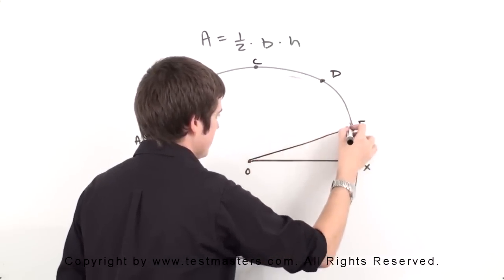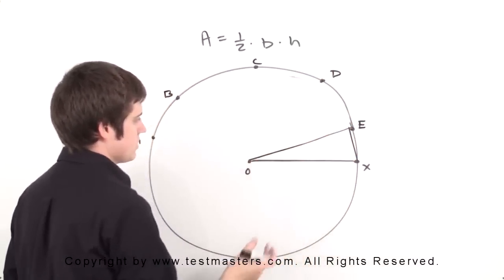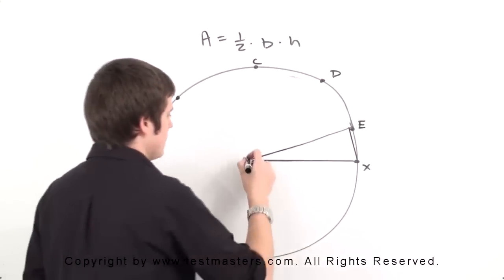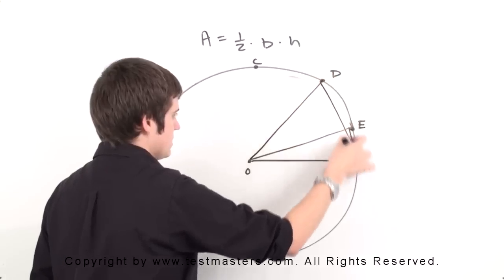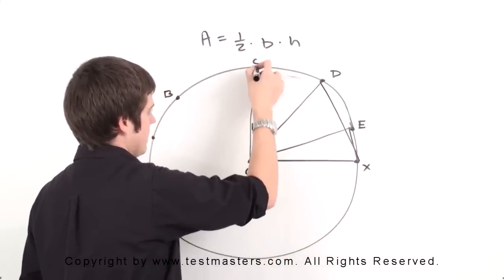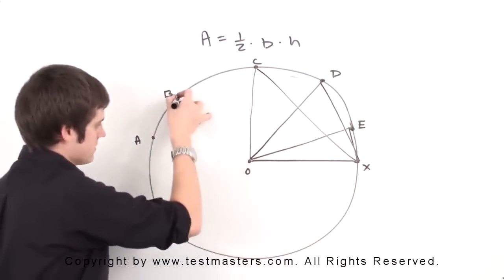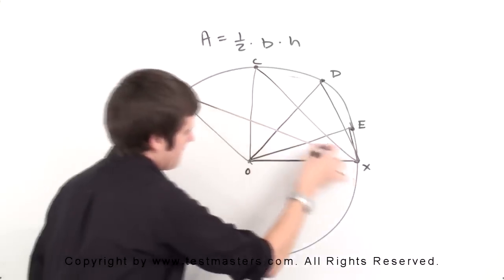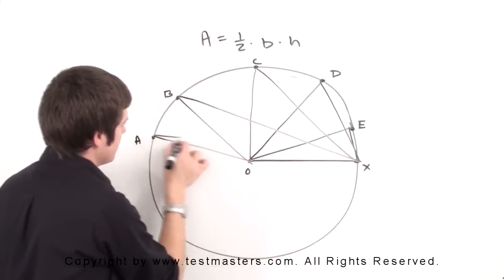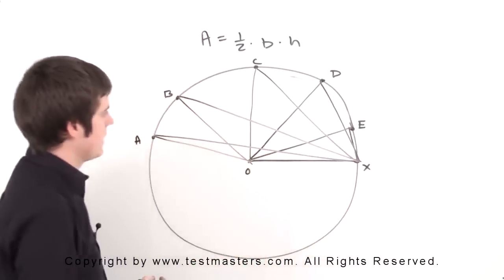Whenever you look at the triangles, you have to look at each individual triangle. For instance, this would be triangle EOX, and then you go from there. If we draw the segment here, this would be triangle DOX. We have COX, BOX, as well as AOX.